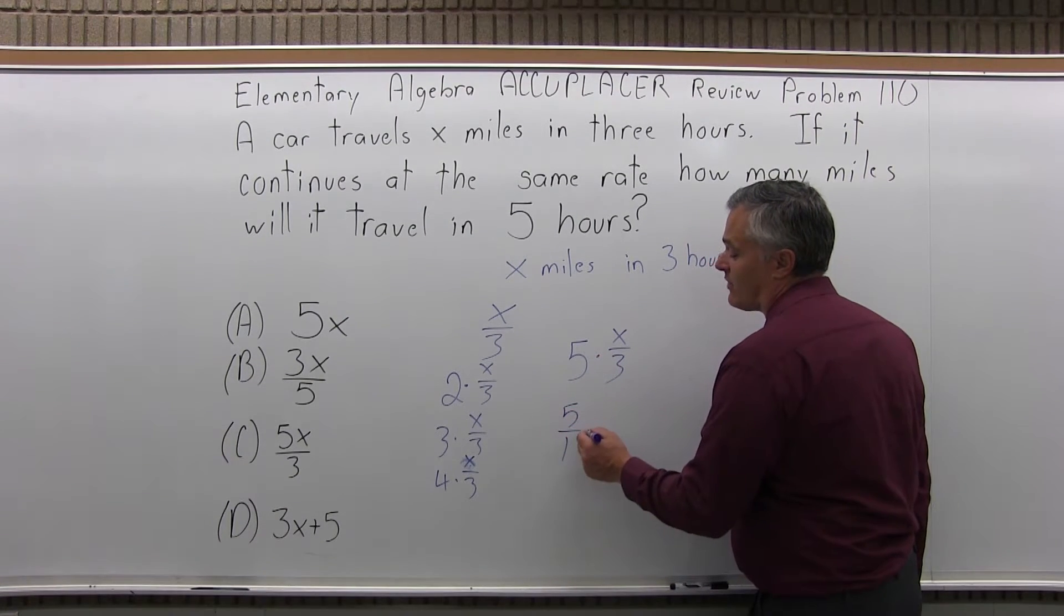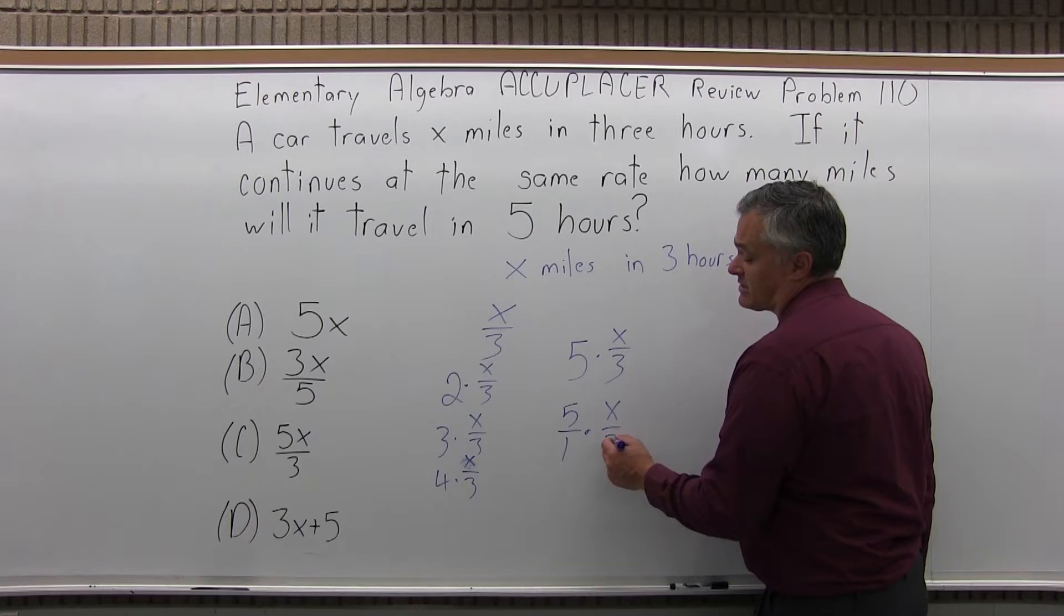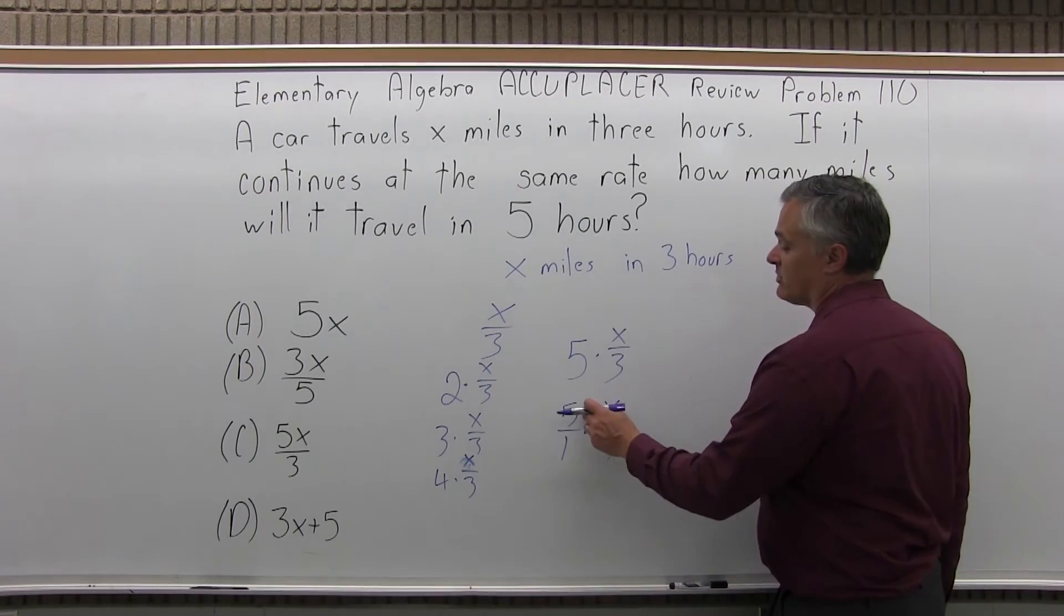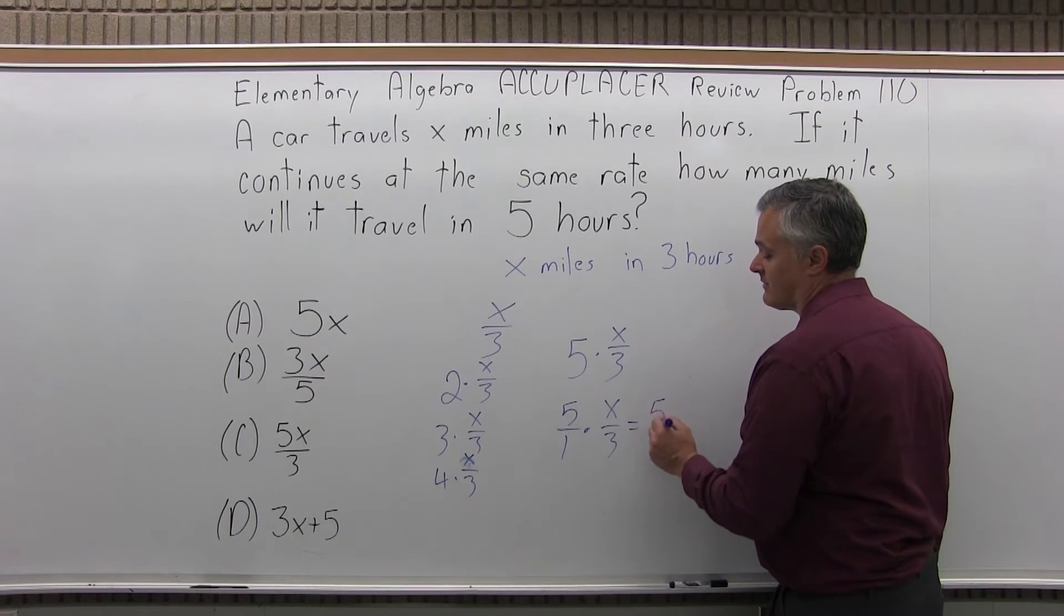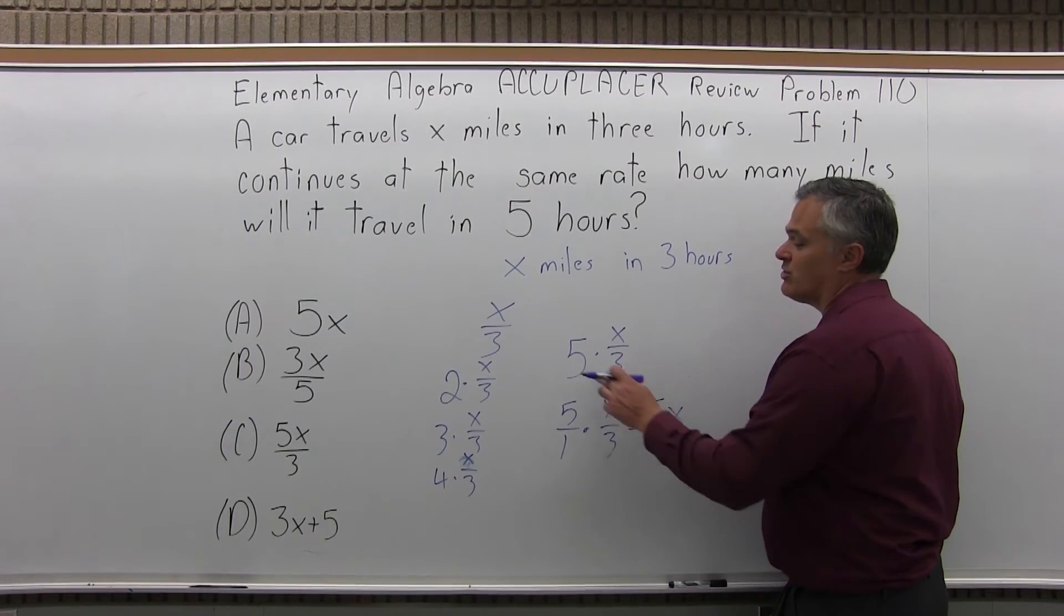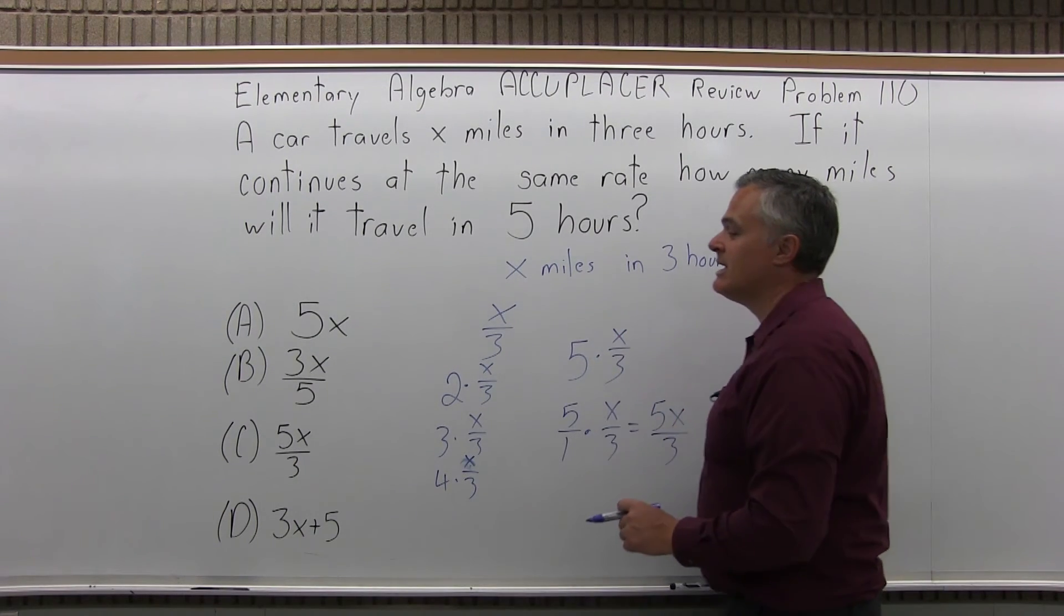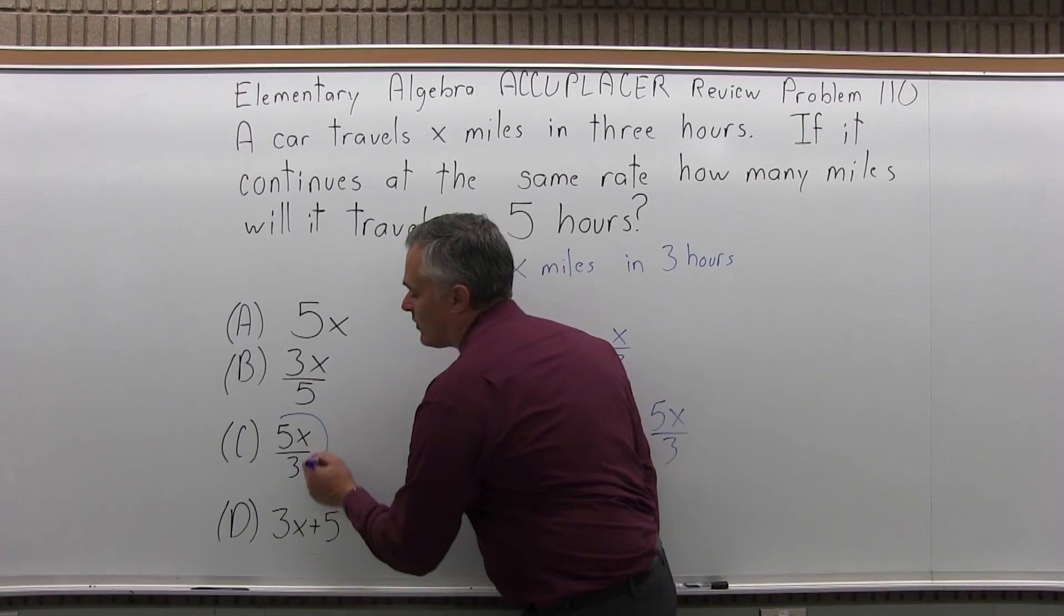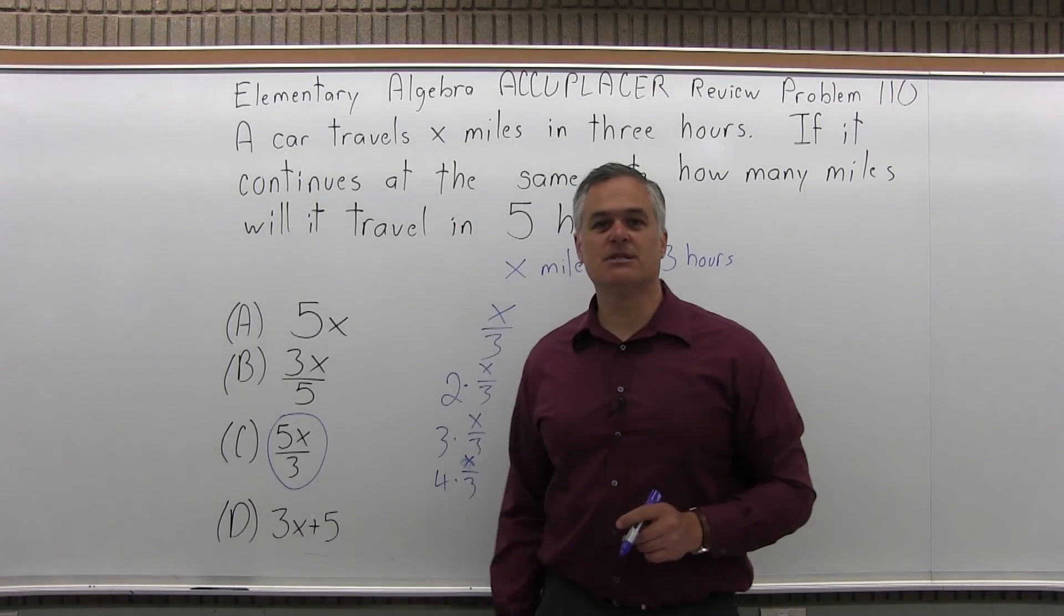You can think of the five as five over one and write times X over three next to it and think of it as multiplying two fractions. So I'll multiply top times top. Five times X is five X. Bottom times bottom, one times three is three. So sure enough, five times X over three is exactly the same as five X over three. So the answer for this problem is option C.